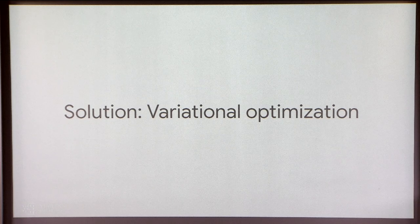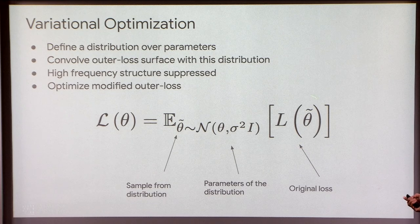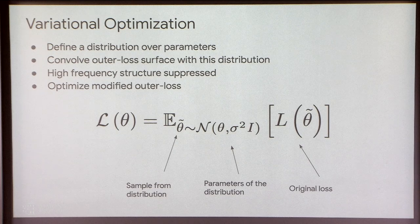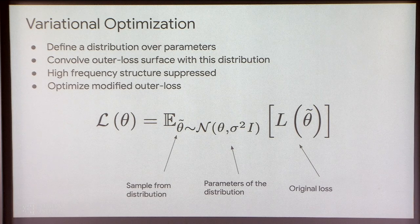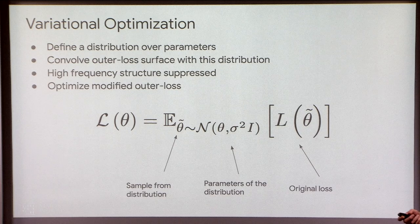Now I'm going to propose one class of solutions to those problems — specifically, we can fix this to a remarkable degree using variational optimization. If L of theta is your original outer loss surface, you can define some distribution over perturbations to your parameters and convolve L of theta with that distribution. For instance, you take parameters theta and perturb them in a Gaussian distribution around theta, then average the original loss over that distribution of perturbations. This effectively smooths your loss landscape and suppresses the high-frequency structure.